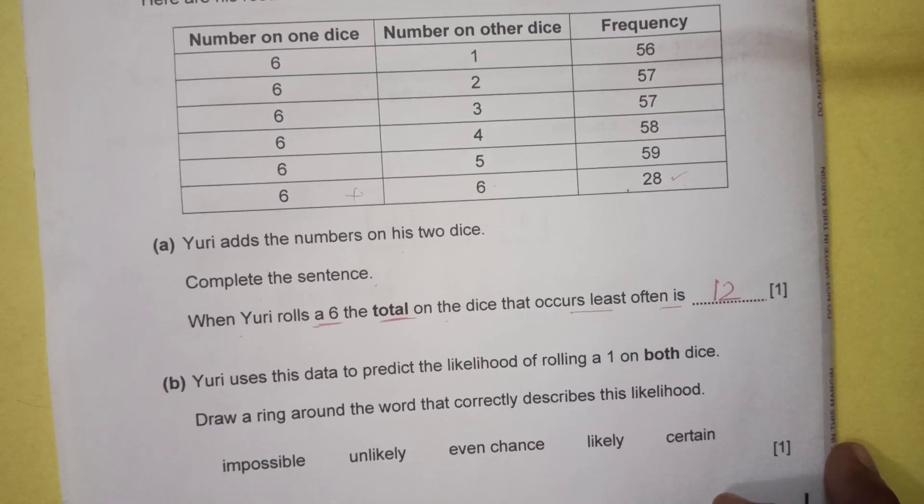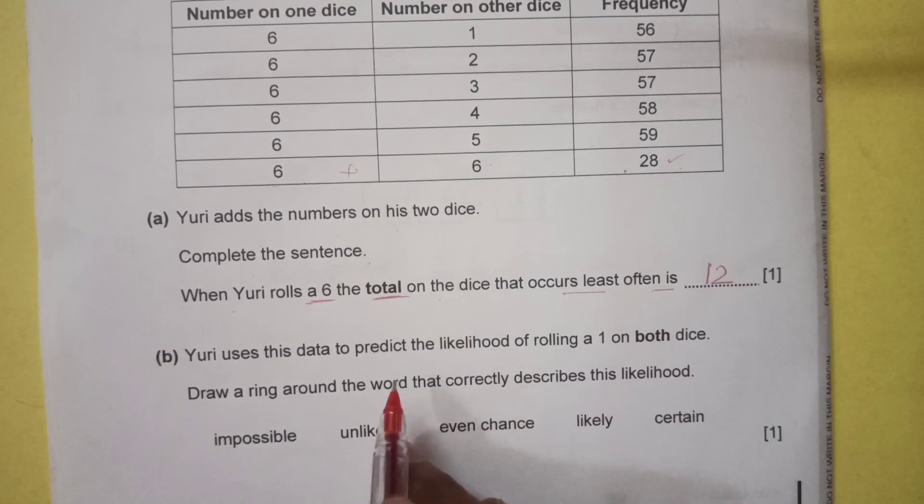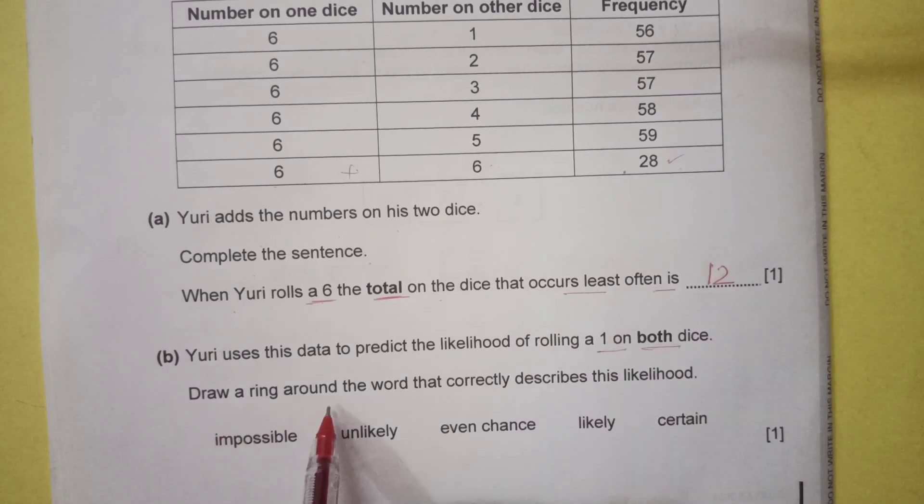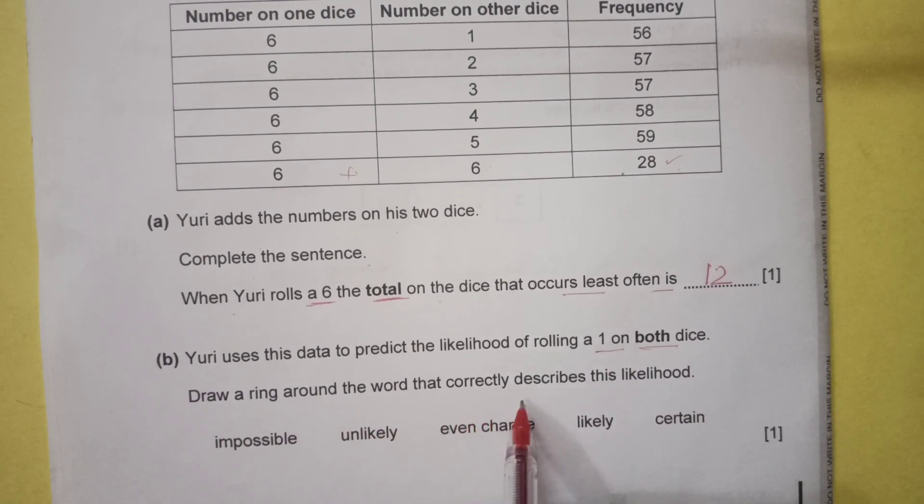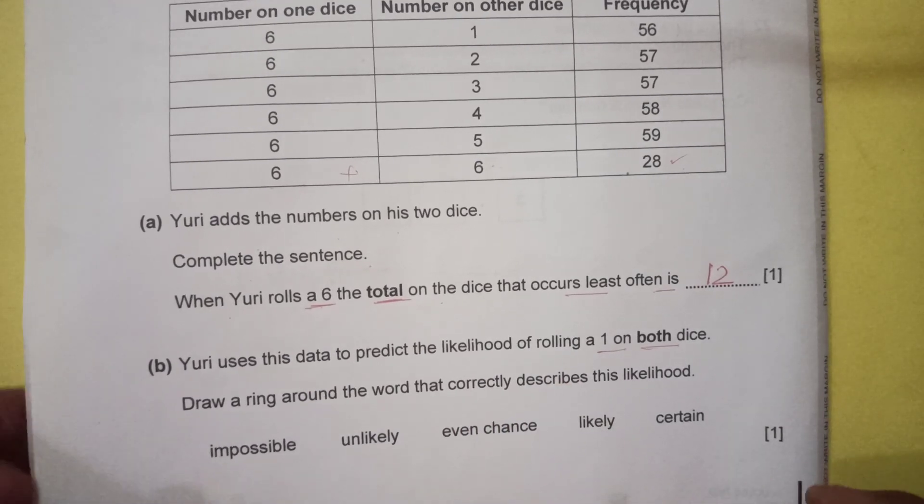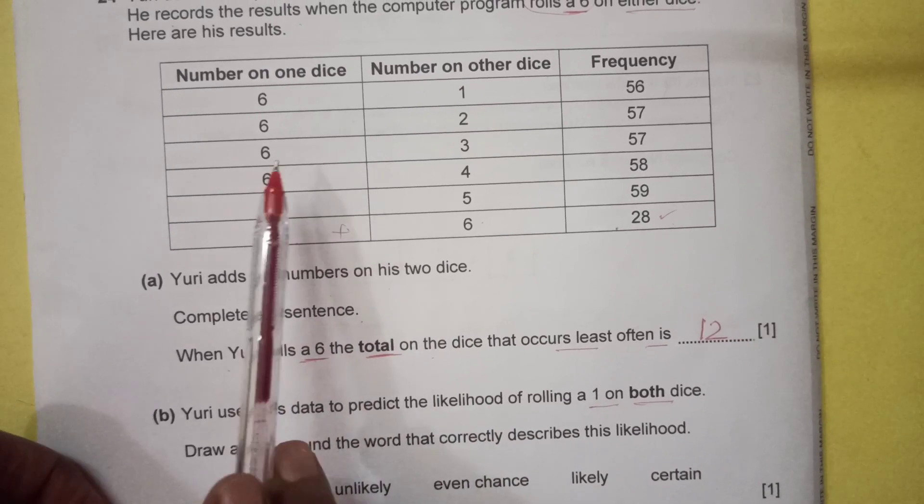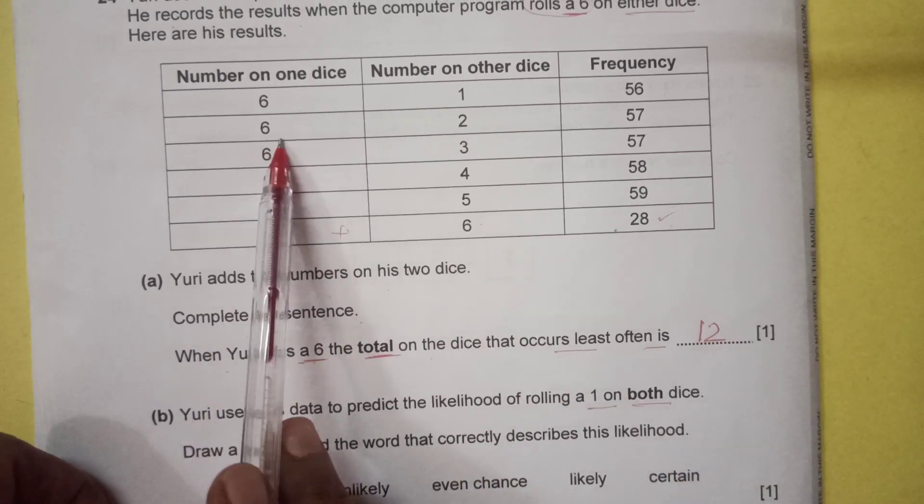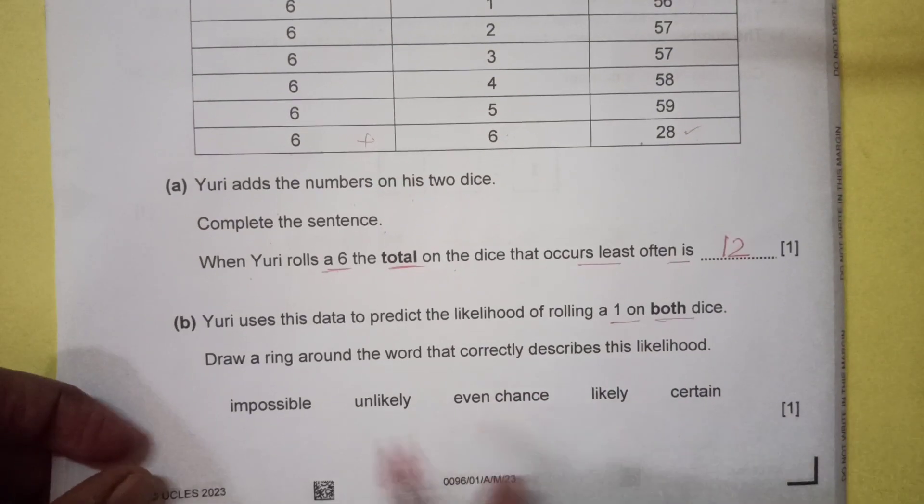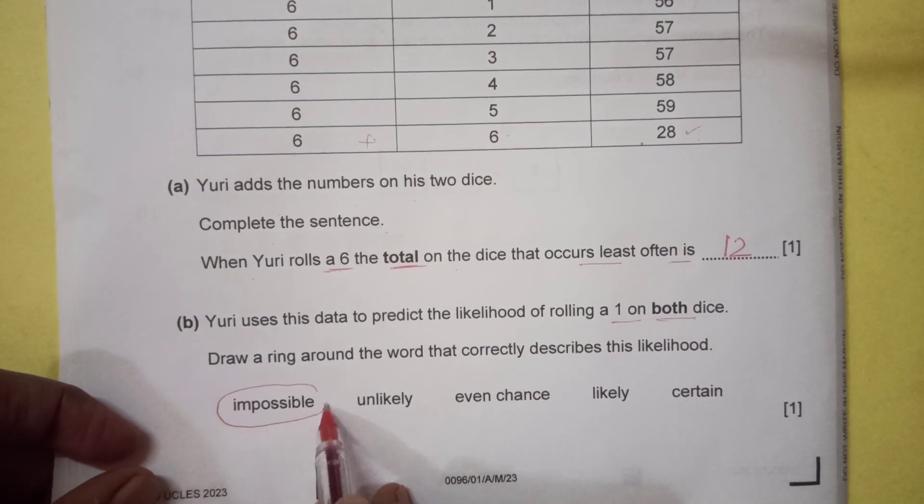Now part B. Yuri uses data to predict the likelihood of rolling a one on both dice. Draw a ring around the word that correctly describes the likelihood. Now if you look at this, rolling one on both is not possible because here we have only six on one dice. So it is going to be impossible.